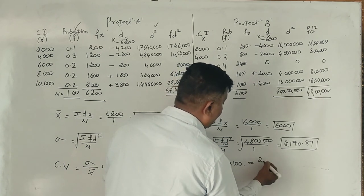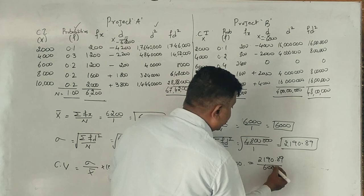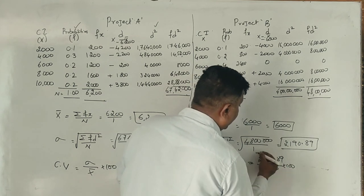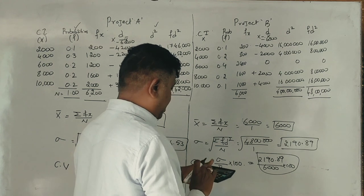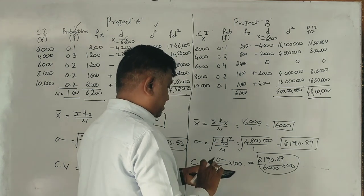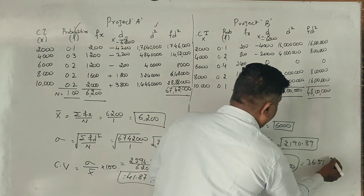48 lakhs square root is 2,190.89. Coefficient of variation: 2,190.89 divided by 6,000 into 100 equals 36.51%.